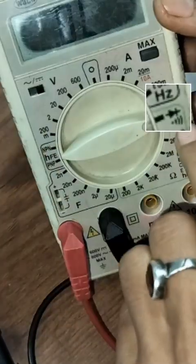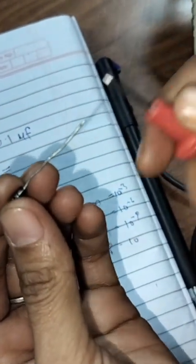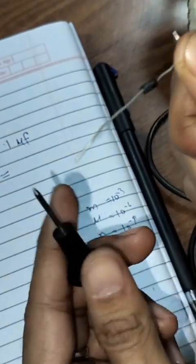Now we will connect it in the forward bias condition. We will connect the red lead to the anode side and the black lead to the cathode side.